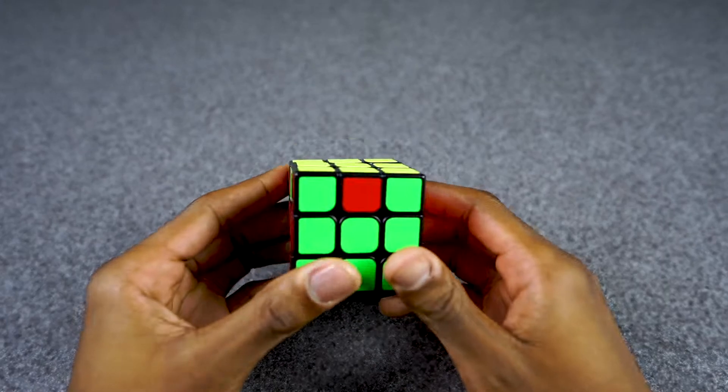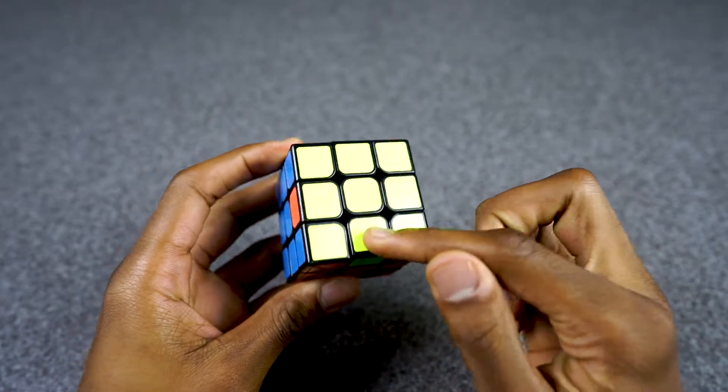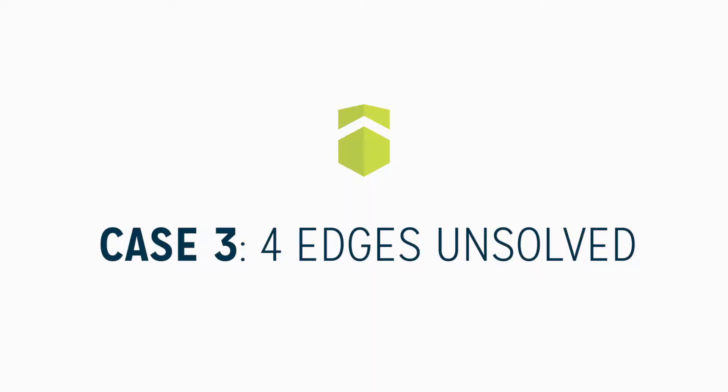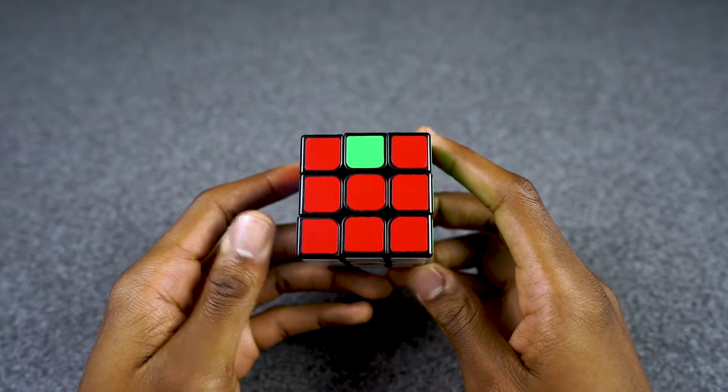It could also look like this, where all four of the edge pieces are not solved. For that, we can just execute the same algorithm again.